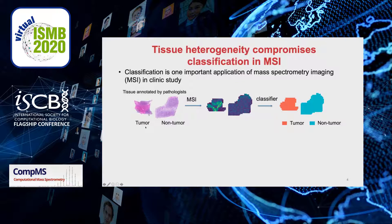With the capability of providing spatially resolved molecular information, MSI has a large variety of applications. Classification is one important application of MSI in clinical study. For example, the classification of tumor and non-tumor can help faster identification of tumor boundary during surgery. In a standard routine, pathologists label each tissue by looking at the H&E stained optical images, and then MSI is applied to obtain the mass spectrum at each location. We can then build a classifier to classify sub-tissue locations into tumor and non-tumor groups.